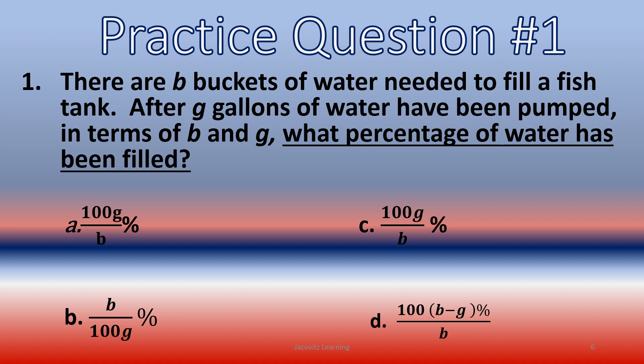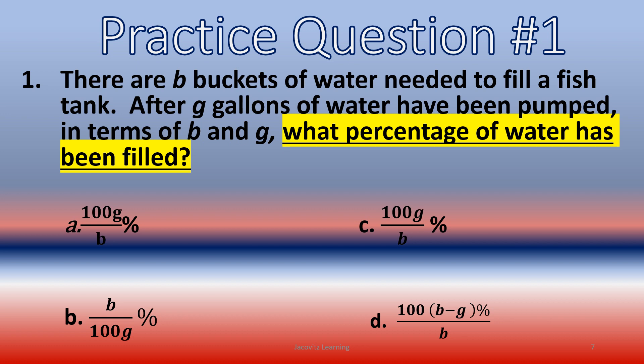Just think about that because as you see these practice questions like this, they're on the SAT, they're on the PSAT, and all they do is take the words around, use different scenarios. One might be instead of B buckets of water, it might be B buckets of gasoline needed to fill a car tank. And so just get used to what it's asking. And already you know it has to be a fraction. Now, we went over this: what percentage of water has been filled? That's all you have to worry about.